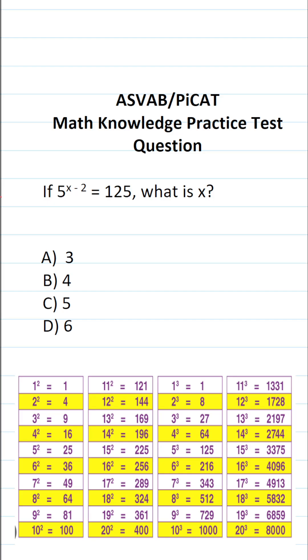This math knowledge practice test question for the ASVAB and PiCAT says if 5 to the x minus 2 power equals 125, what is x?